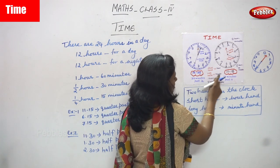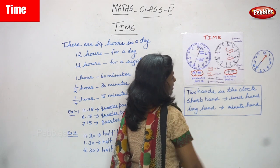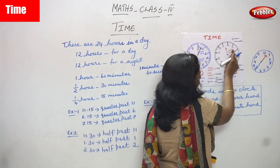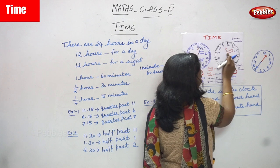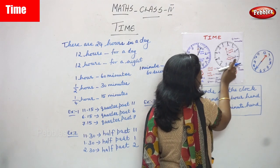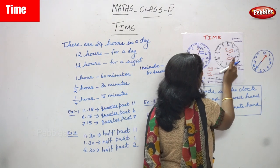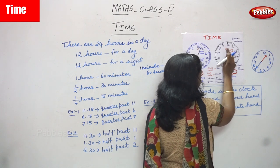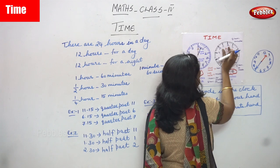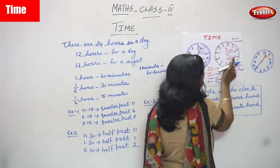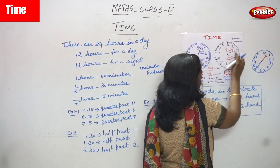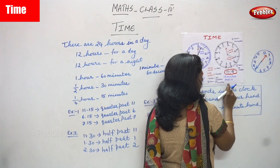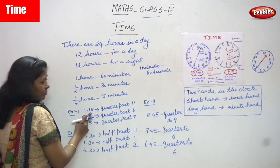Short hand is the hour hand and long hand is the minute hand. One hour is equal to 60 minutes and half an hour is equal to 30 minutes. In this clock, short hand is red and long hand is violet. The red hand comes between 11 and 12, and the violet long hand points to 3. Each number represents 5 minutes: 1 is 5, 2 is 10, 3 is 15 — so the time is 11:15, which means 15 minutes past 11.